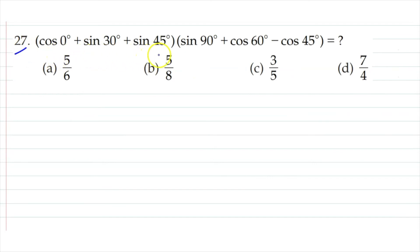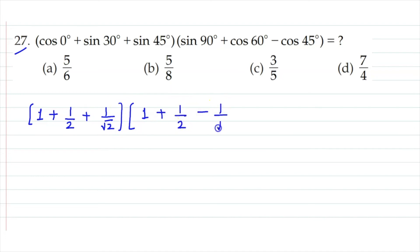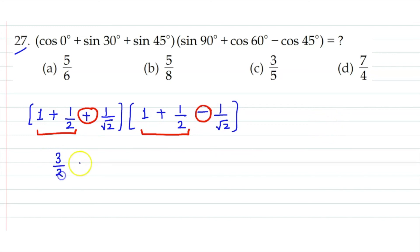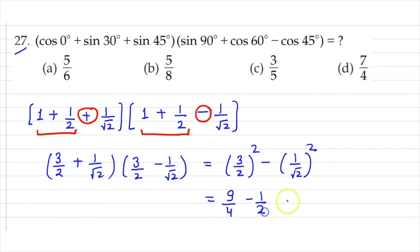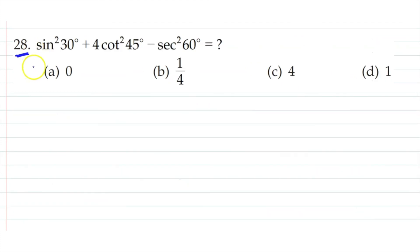Question 27: cos 0° + sin 30° + sin 45° + sin 90° minus cos 60° minus cos 45°. Substituting: 1 + 1/2 + 1/√2 + 1 minus 1/2 minus 1/√2. The 1/2 terms and 1/√2 terms cancel: 1 + 1 = 2. Wait — we get (1 + 1/2 + 1/√2 + 1 − 1/2 − 1/√2). Simplifying: (1+1/2+1)² gives 3/2 squared = 9/4, and (1/√2)² = 1/2. Result: 9/4 minus 2/4 = 7/4. Option D is correct.